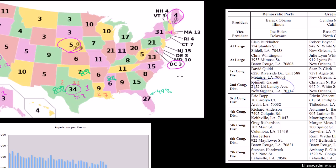Nebraska and Maine don't use winner-take-all. In Nebraska, which has three congressional districts, if one district goes to the Democrat and two to the Republican, they get one and two electoral votes respectively. Then there are two at-large votes decided on a statewide winner-take-all basis. Maine works the same way but has two congressional districts, so two votes can go either way by district, with at-large votes based on statewide results.